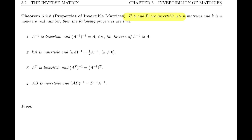Let's read the first statement together. It says that if A is invertible, then A inverse is also invertible, and A inverse inverse equals A. In other words, the inverse of A inverse is A. So that's what we want to show.